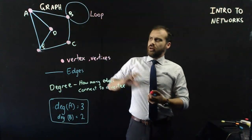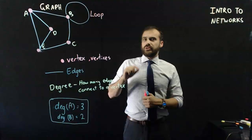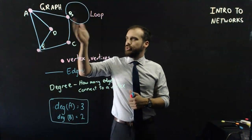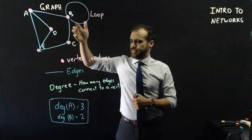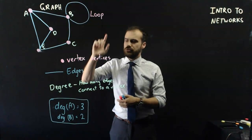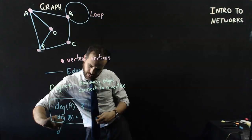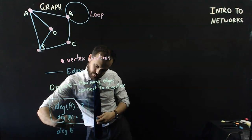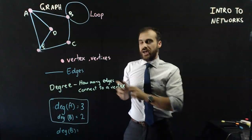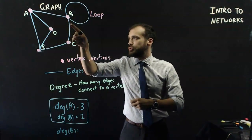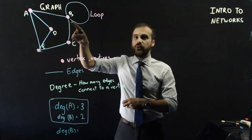Now, one thing I want you to notice about the loop, is when you add a loop to a vertex, watch what happens to the degree of B now. The degree of B after adding that loop, is 1, 2, 3, and 4.